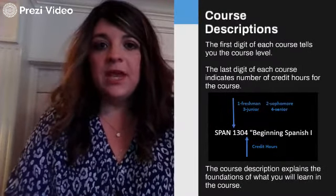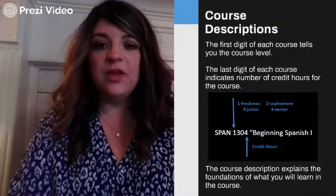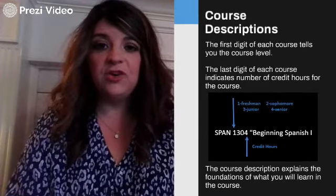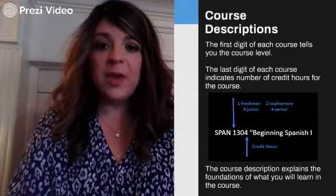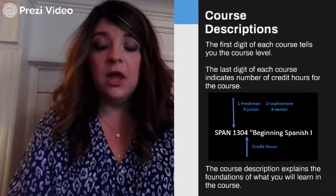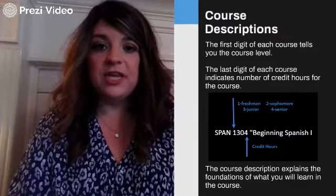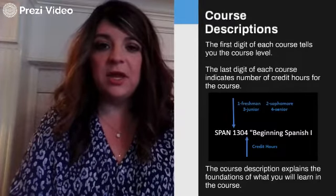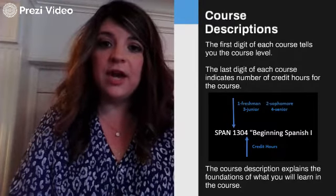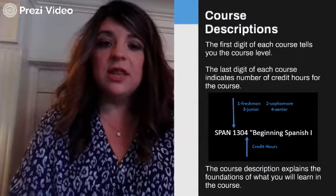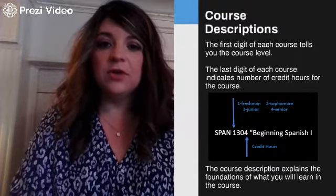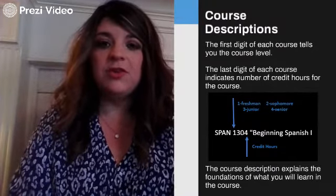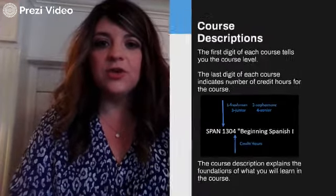Each course has its own course name and course code. We're looking at Beginning Spanish 1 on the screen, or SPAN 1304. The 1 in 1304 stands for the level of the course — 1 means freshman. The 4 stands for the credit hours that the course is worth; this course is worth 4 credit hours. The course description will also give you information about what you may learn in the course.